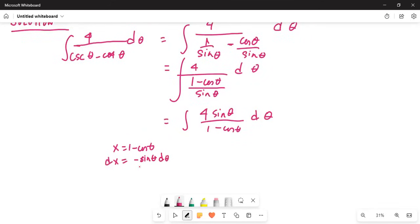Actually, the derivative of cosine theta is negative, so it is positive. The two minuses make it plus. So we have this equals 4 dx over x, and 1 minus cosine theta is x.